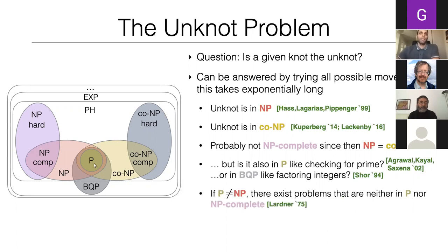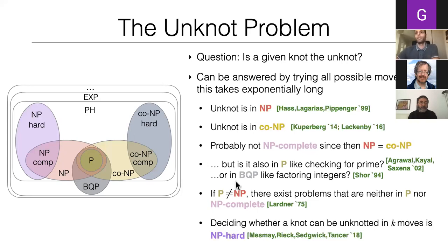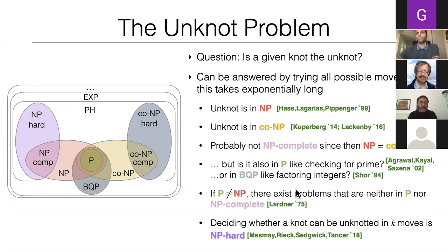However, there's a theorem saying that unless P equals NP, there also exist problems that are neither in P nor NP-complete, so it could be there's no fast algorithm for the unknot problem. In fact, two years ago it was shown that deciding whether a knot can be unknotted in k moves is NP-hard — so the harder question of unknotting in k steps pushes complexity back up. Time will tell, but there's active development on these questions.